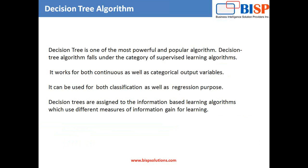Decision tree is one of the most frequently and widely used supervised machine learning algorithms and it can perform both regression and classification tasks. The intuition behind the decision tree algorithm is very simple but also very powerful. Decision trees are an information-based learning algorithm which uses different measures of information gain for learning, and for each attribute in the dataset, the decision tree algorithm forms a node.